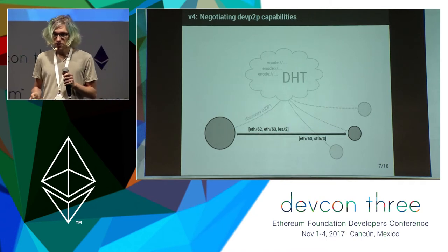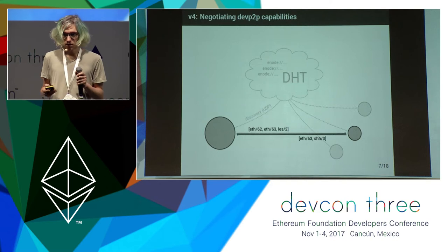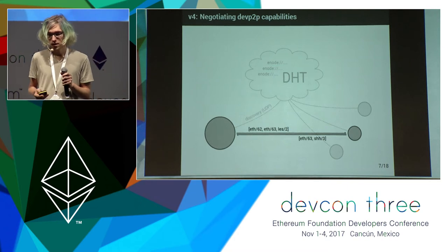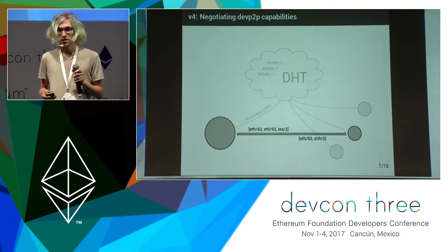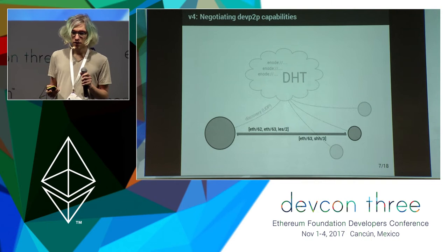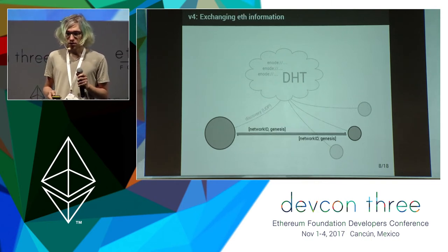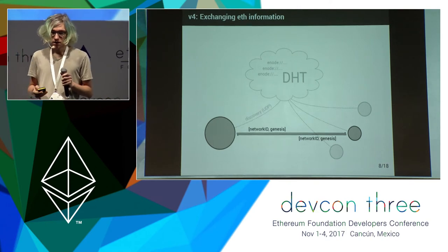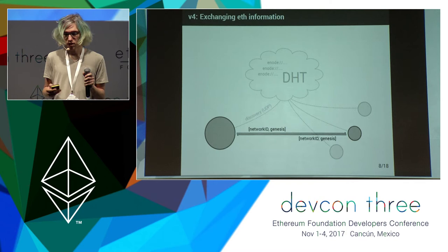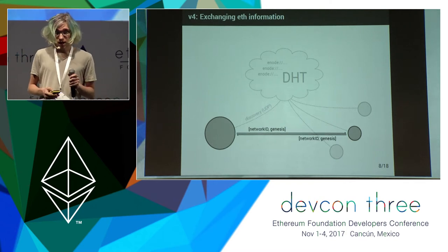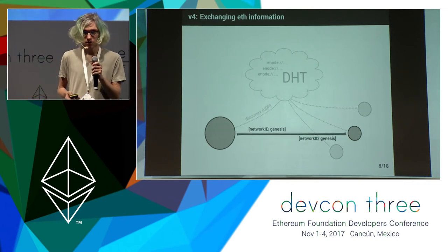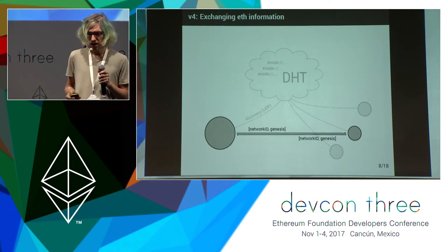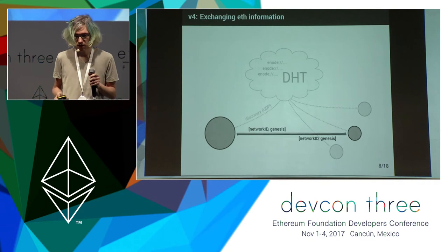Once the connection is established we exchange capabilities with the other side. This is where the DevP2P application layer kicks in. In this particular case, the shared capability is just one: it's the ETH capability in version 63. Once ETH version 63 is running, we can exchange information about the blockchain we're both on, and once that matches we have a new peer. That's the current system — not super efficient, but that's the idea.